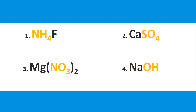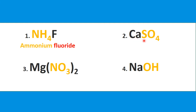Let's look at some examples — the polyatomic ions are already colored, which makes them easier to identify. We have NH4 and F. NH4 is the polyatomic ion ammonium, and F is fluorine — but as an anion it ends with -ide, so that's fluoride. We get ammonium fluoride. Next, Ca is calcium — it's a metal, so it stays the same. SO4²⁻ is sulfate. Put them together: calcium sulfate.